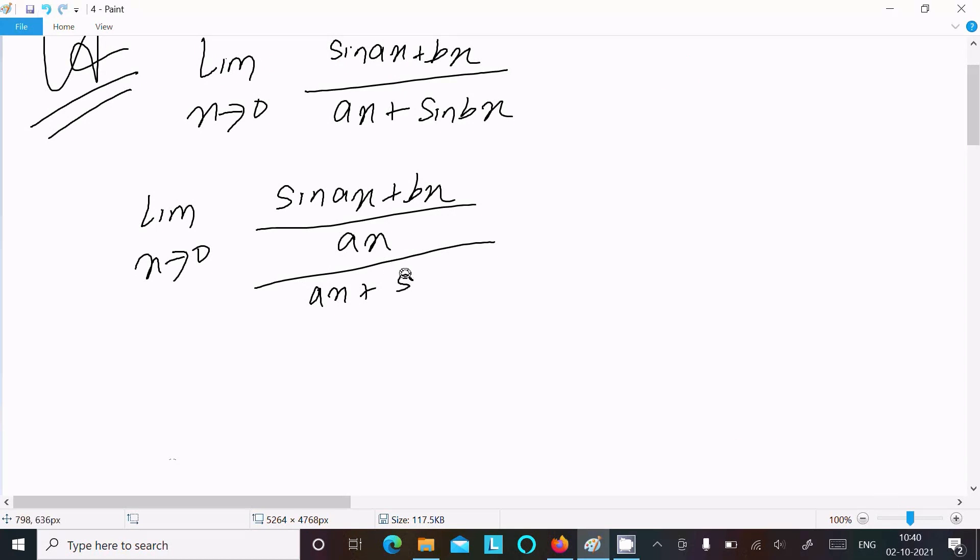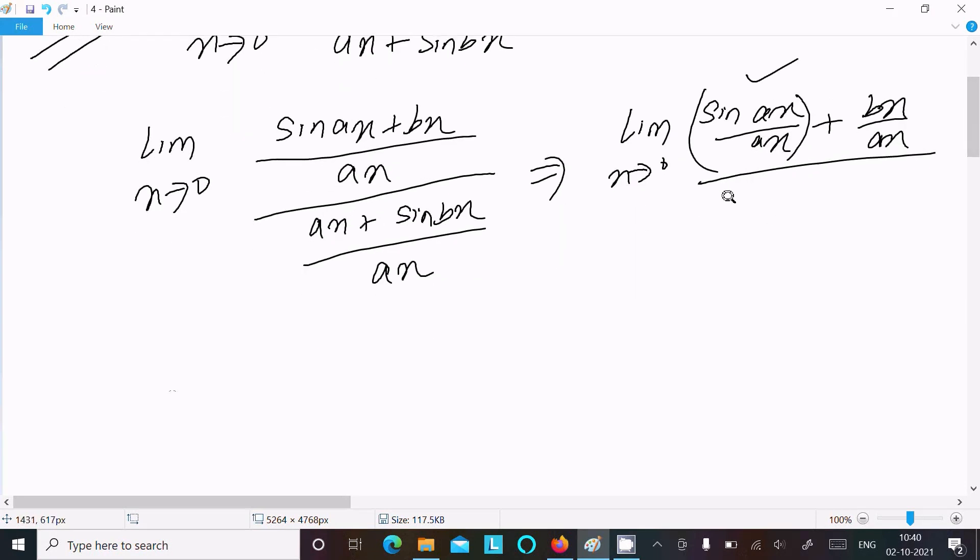Dividing everything by ax, we get: lim as x→0 of [sin(ax)/ax + bx/ax] / [1 + sin(bx)/ax].